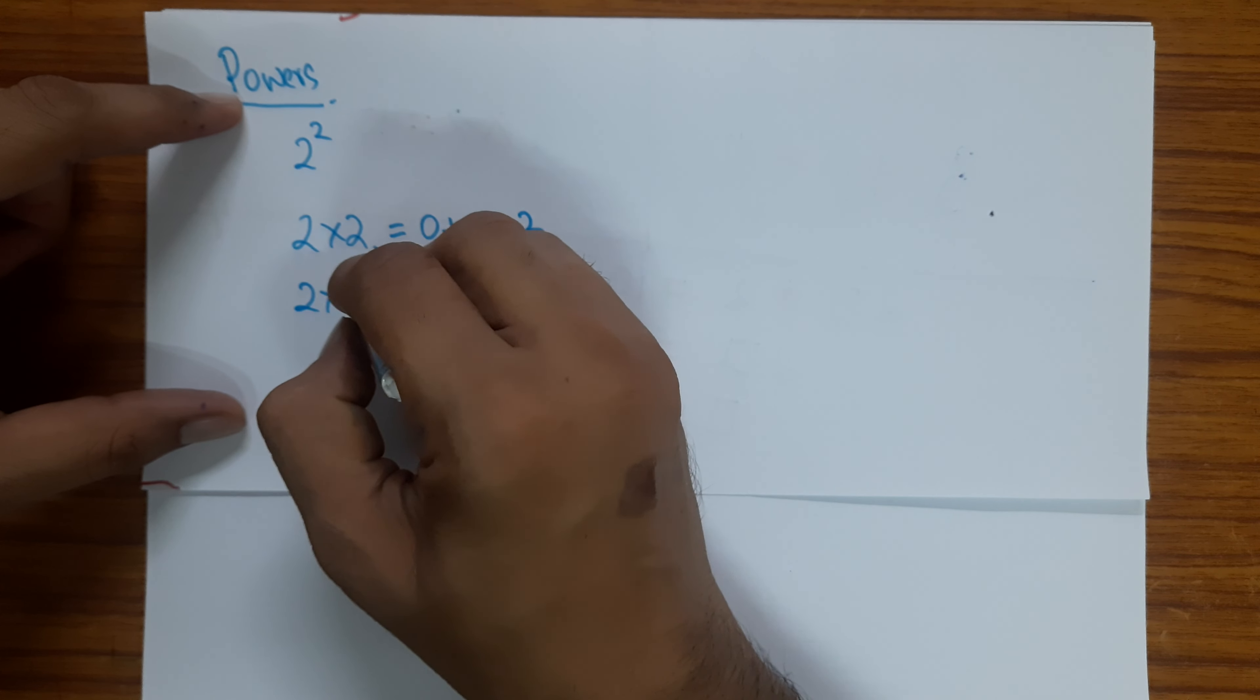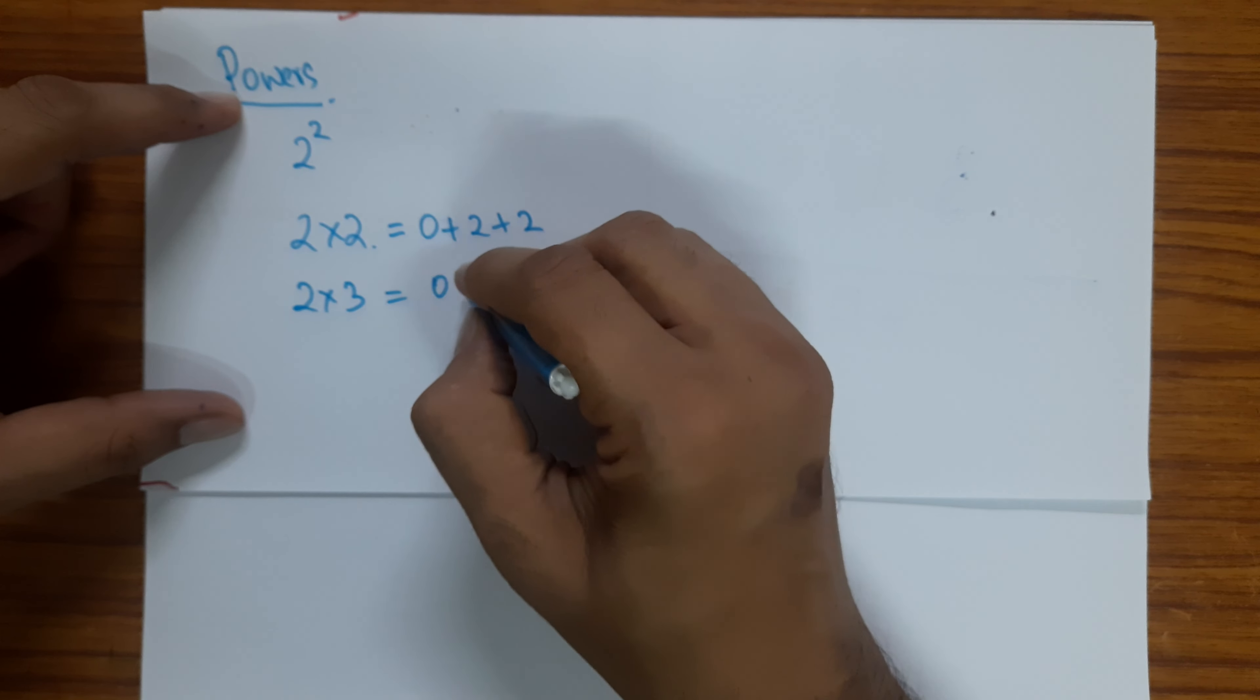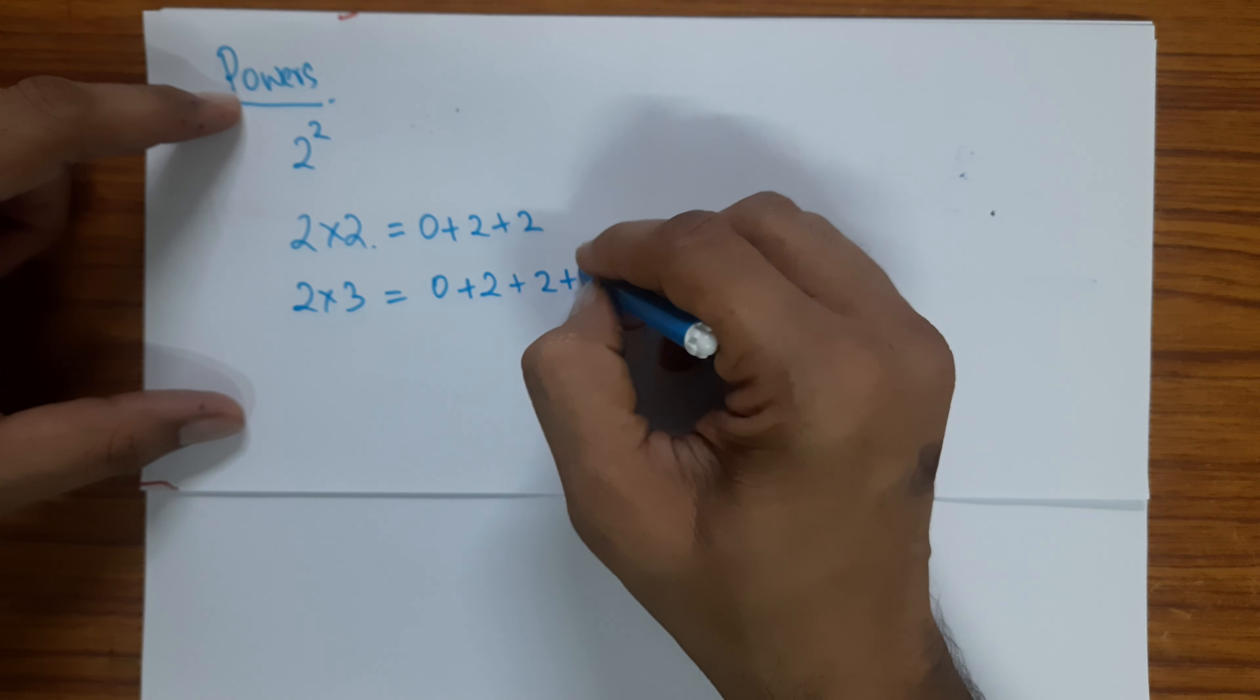So if I have 2 times 3, I am saying this is to the additive 0, additive identity, I am going to add 2 3 times.